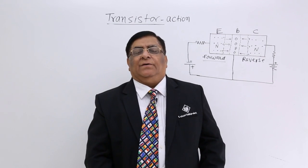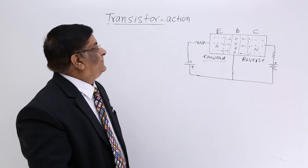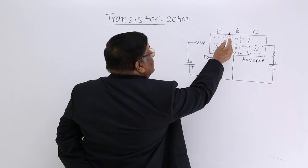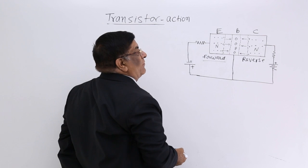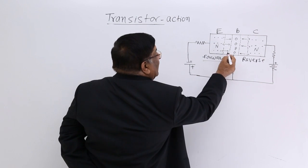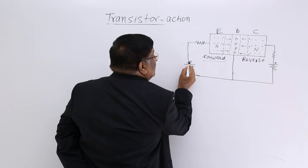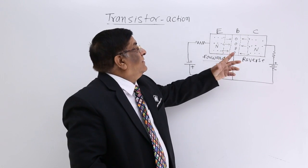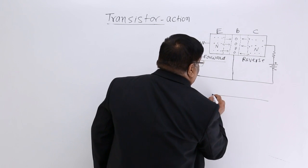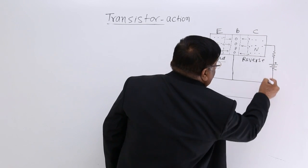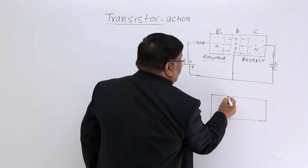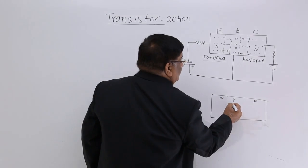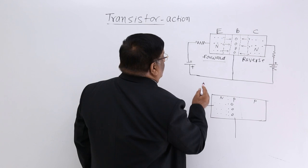To see the action in the transistor, we have made this circuit. Now this depletion layer is between E and B. This is forward bias. In forward bias, the depletion layer shrinks, and once we increase this voltage sufficiently — more than the cut-in voltage — the depletion layer will demolish. There will be no depletion layer, and the current flows very easily.